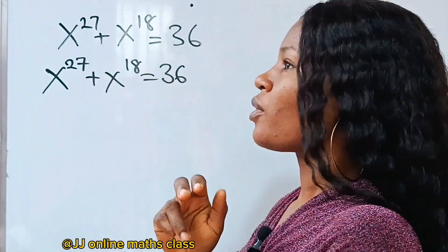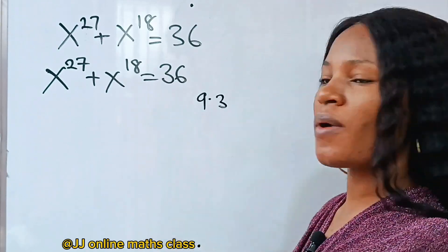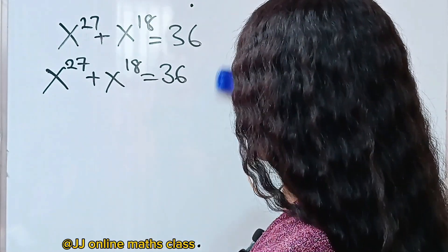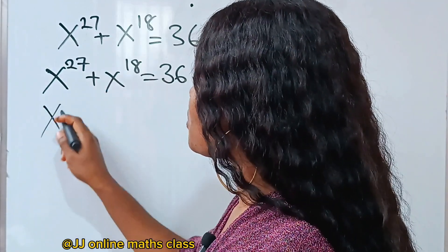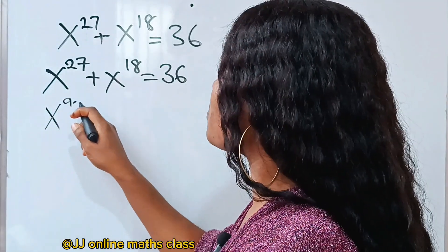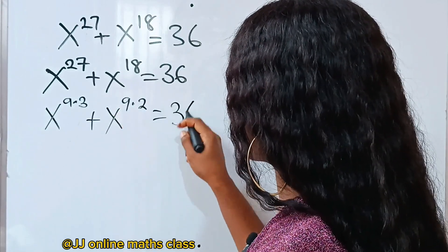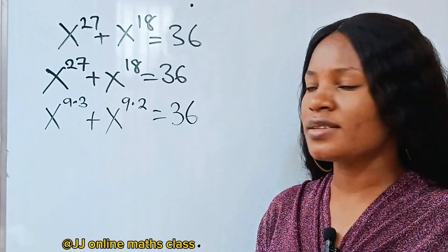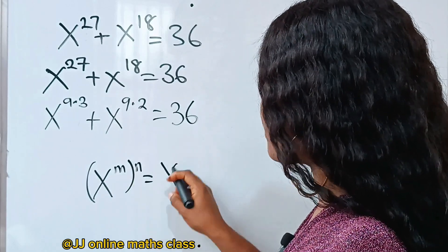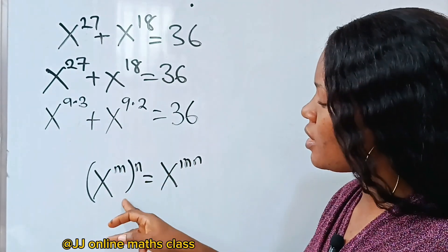When you look at this, you will notice that 27 can be written as 9 multiplied by 3, and 18 can be written as the same 9 multiplied by 2. So we have x to the power of 9 multiplied by 3, plus x to the power of 9 multiplied by 2 is equal to 36. Recall the law of indices that states that x raised to the power of m raised to the power of n is the same thing as x raised to the power of m times n.